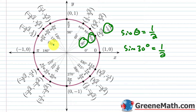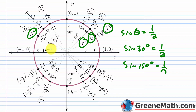Sine is positive in quadrant 2 as well. Thinking about reference angles: if the reference angle is 30 degrees, sine will also be 1/2. In quadrant 2, a 30-degree reference angle corresponds to 150 degrees, since 180 minus 150 equals 30. So sine of 150 degrees also equals 1/2. This is 150 degrees or 5 pi over 6 in radians.